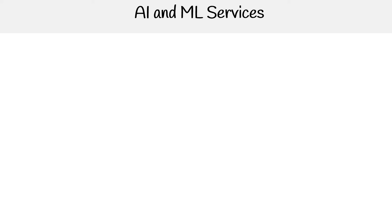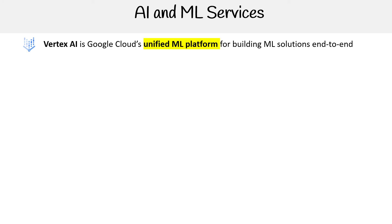Hey, this is Andrew Brown from ExamPro. We're looking at AI and ML services, and the most important one here is Vertex AI. This is Google Cloud's unified ML platform for building ML solutions end to end. A lot of the stuff you're going to be doing when it's ML or deep learning, it's gonna be with Vertex.